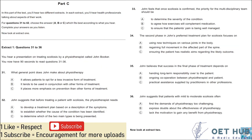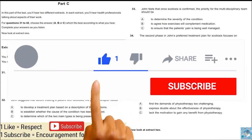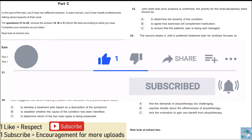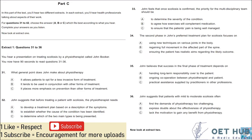Part C. In this part of the test, you'll hear two different extracts. In each extract, you'll hear health professionals talking about aspects of their work. For questions 31 to 42, choose the answer A, B or C which fits best according to what you hear. Complete your answers as you listen. Now look at Extract 1. Extract 1, questions 31 to 36. You now have 90 seconds to read questions 31 to 36.